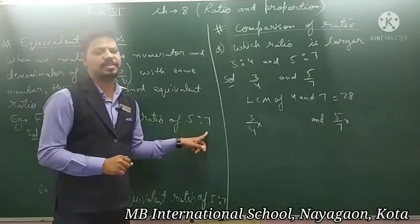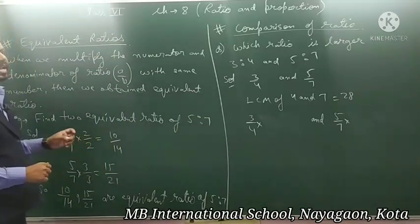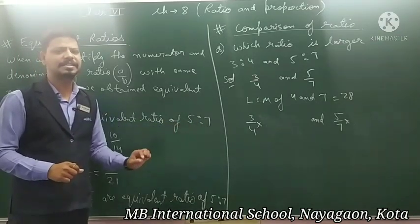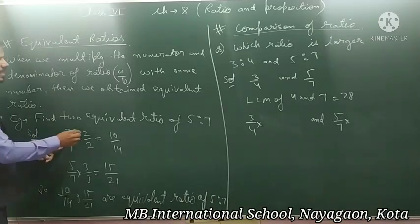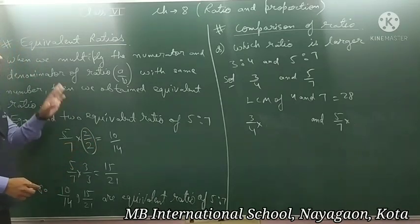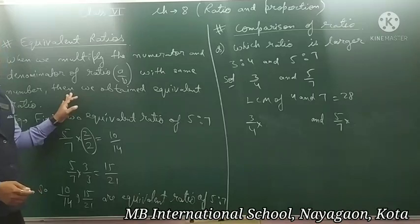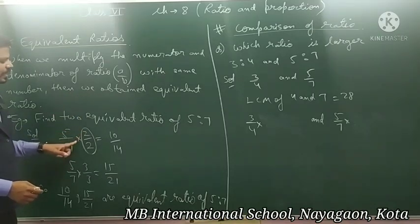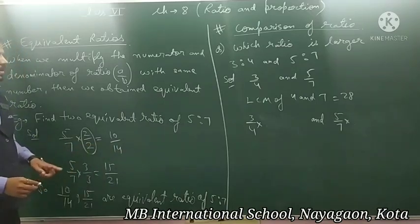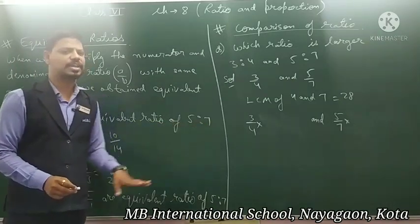For example, you have to find the equivalent ratio of 5 ratio 7. So 5 ratio 7, the fraction is 5 upon 7. You know that the numerator and the denominator of the ratio are multiplied with the same number. 5 upon 7 ka numerator ko bhi 2 se multiply kar diya, denominator ko bhi 2 se multiply kar diya. 5 ko 2 se multiply karenge — 10 aega, and 7 ko 2 se multiply karenge — 14 aega. Means 10 upon 14 is an equivalent ratio of 5 ratio 7.